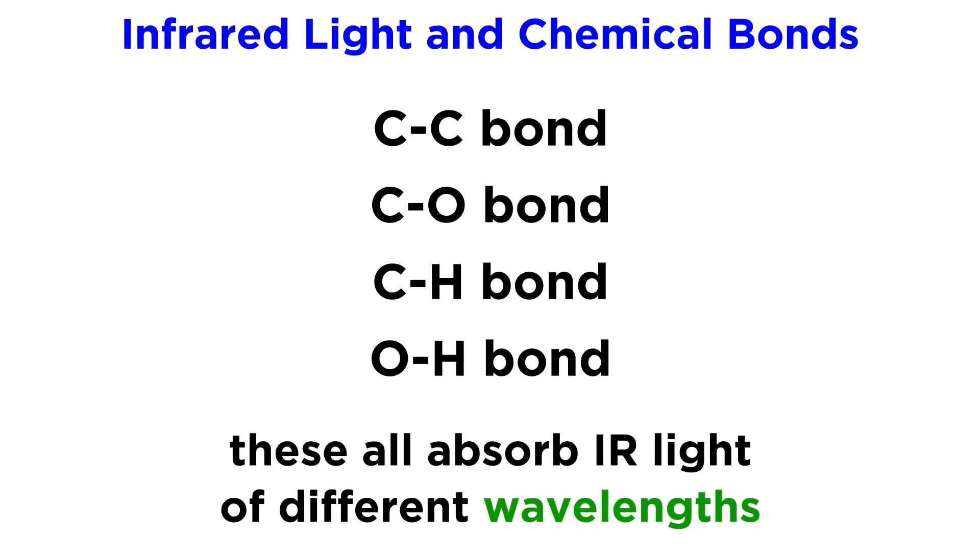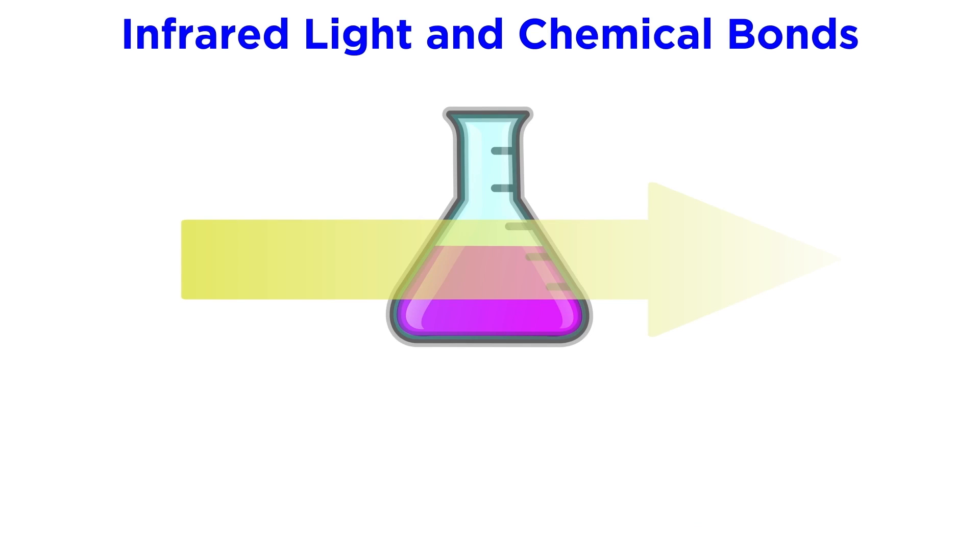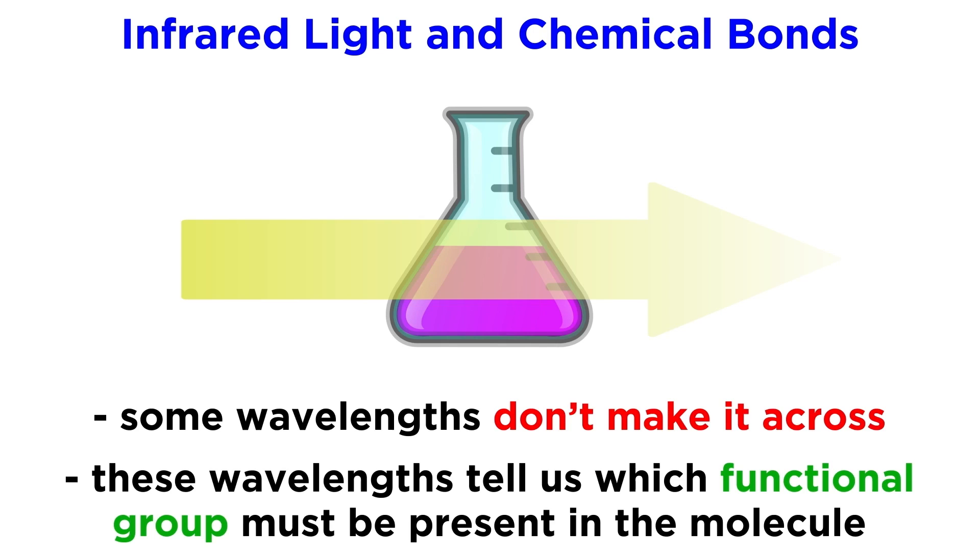All of these vibrational modes are induced by infrared light, and the specific frequency that will cause these behaviors will depend on the precise identity of the bond. So carbon-carbon, carbon-oxygen, carbon-hydrogen, oxygen-hydrogen—these will all absorb infrared light of differing wavelengths. When light of varying wavelengths passes through the sample, the wavelengths that don't make it to the detector must have been absorbed by the sample, and this tells us what kinds of functional groups are present in the molecule.